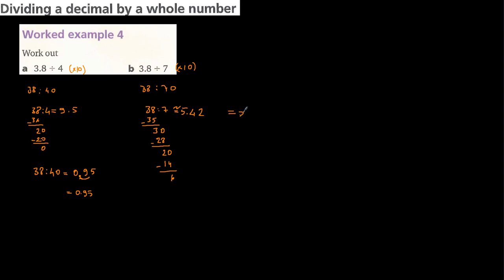But since we are dividing 3.8 by 7, we need to move the decimal point one unit to the left. So the answer becomes approximately 0.542. If you want to continue, you may get more decimal places, but the operation will likely continue for many more steps.